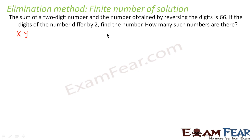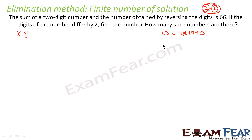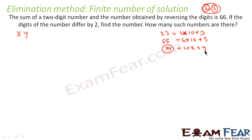If the two digits are, say, 2 and 3, the number formed is 23. To get 23, we multiply 2 by 10 and add 3. So 23 is 2 into 10 plus 3. If the number is 65, then x is 6 and y is 5. To find the actual number, multiply 6 by 10 and add 5. So for digits x and y, the number is 10x plus y.